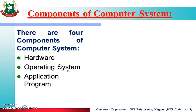The next component is the application program, which is installed by the user as per requirement on top of the system. The last component is the user. So these are the four basic components of our computer system.